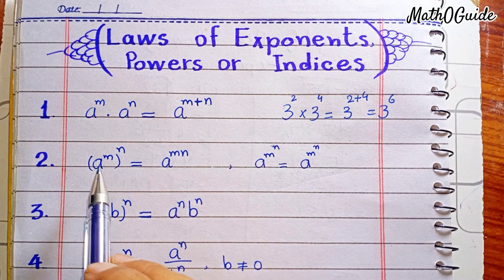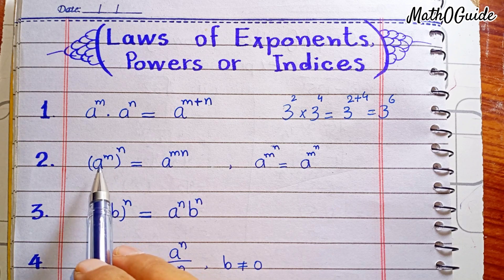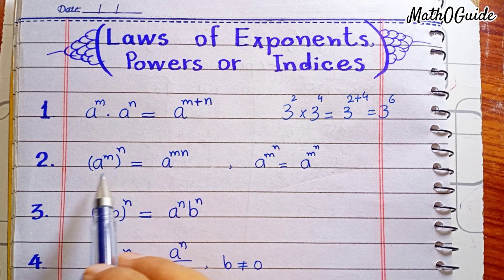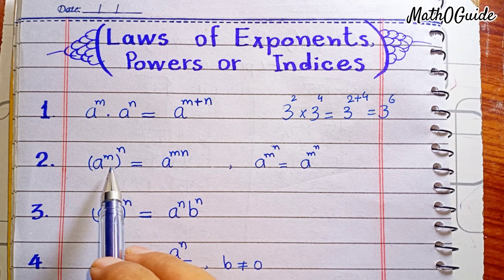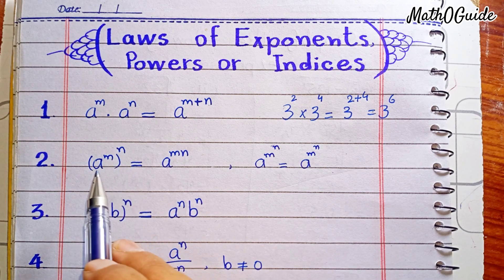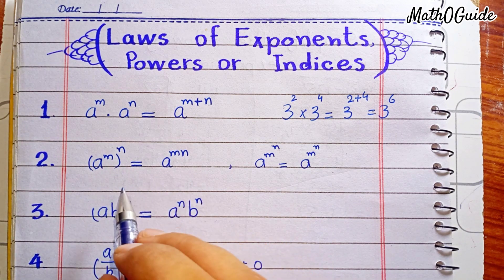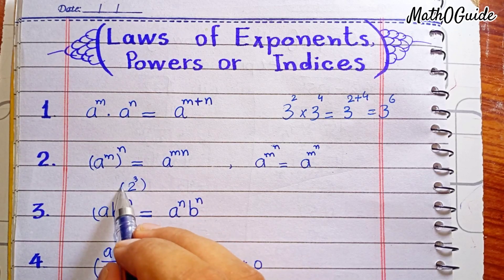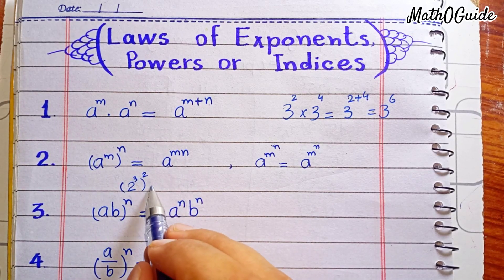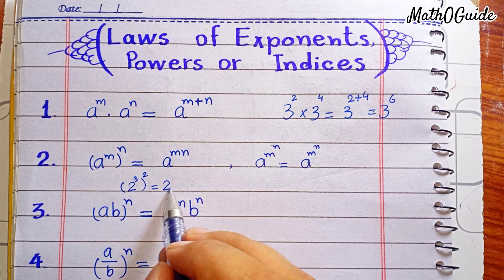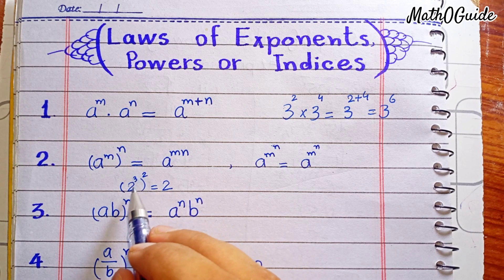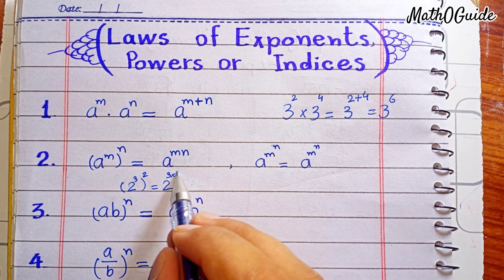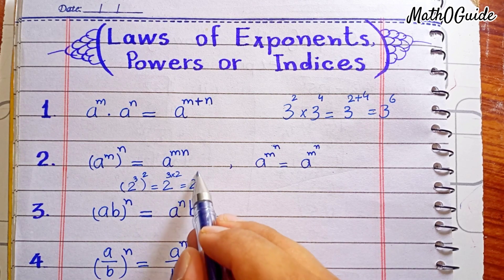Next is the power law: when a base has a power and another power with a bracket involved. For example, we have 2 raised to power 3, with a bracket raised to power 2. In this case we multiply these powers — the base is 2 and 3 multiplied by 2 — so we get 2 raised to power 6.